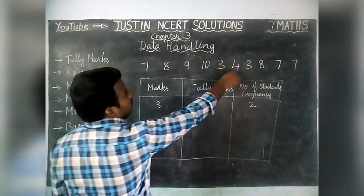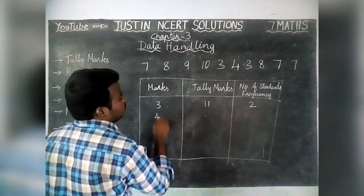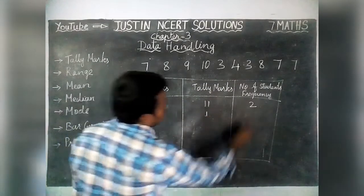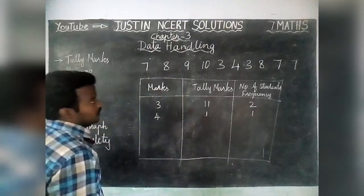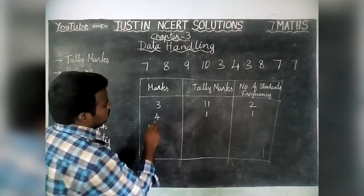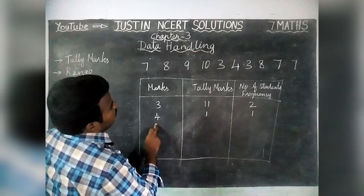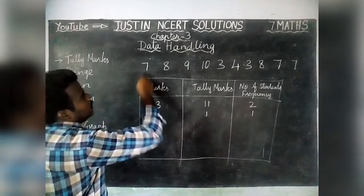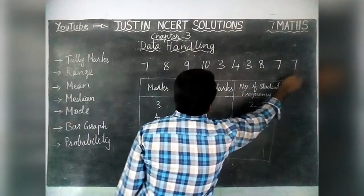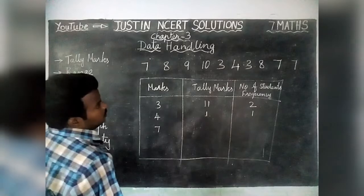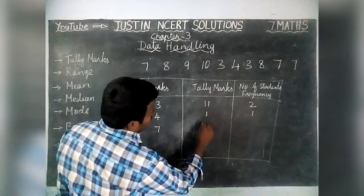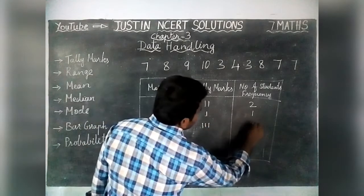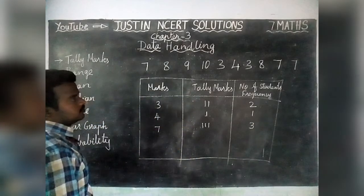Next mark is 4. In 4, only 1 member got that mark, so we write 1. Next mark is 7. In 7, totally 3 members got that mark, so we write 3 tally marks.